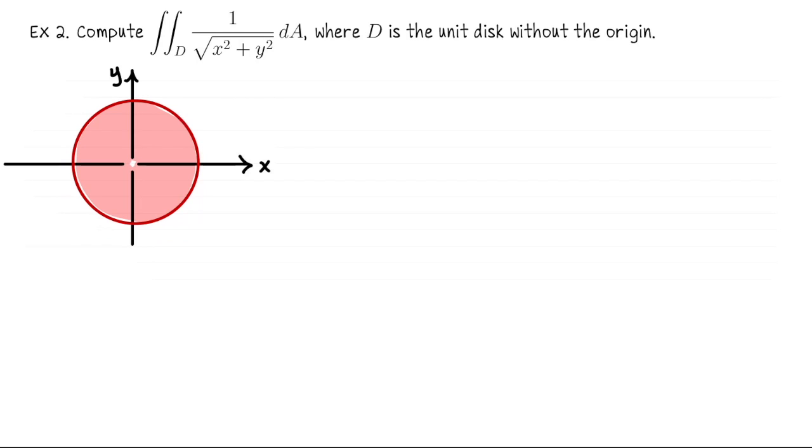For our second example, let's compute the double integral of 1/√(x² + y²) over the unit disk without the origin. This is kind of like an improper integral because as we approach the origin, the integrand gets really large. So it's not even clear that this double integral will exist. But let's see what happens when we switch into polar coordinates. So every point in this region has an r value between 0 and 1, and then theta goes from 0 to 2π. So in particular, I wrote 0 < r ≤ 1 because we took out the origin. Okay, these bounds are pretty nice for r and theta, so we can set up our double integral.